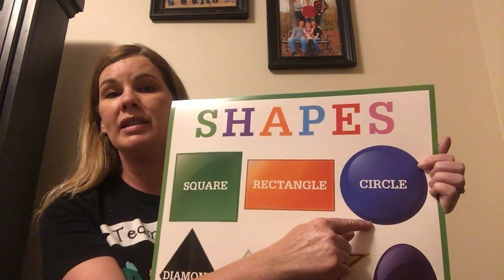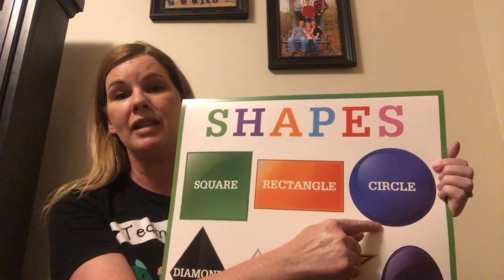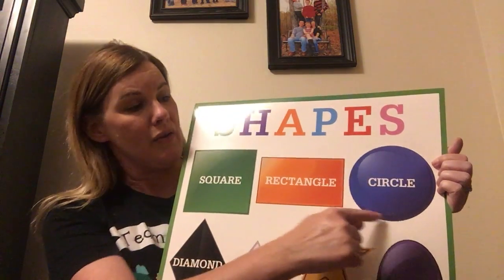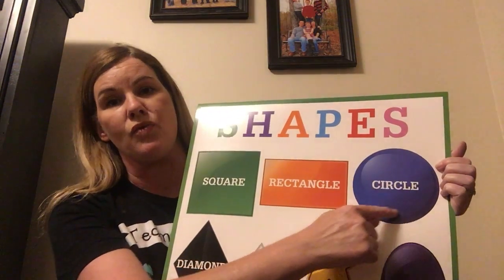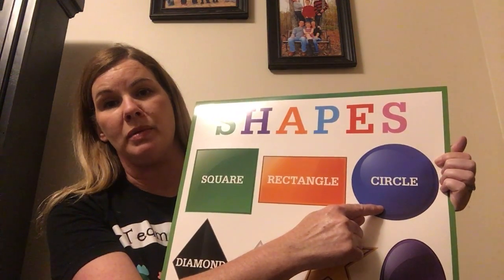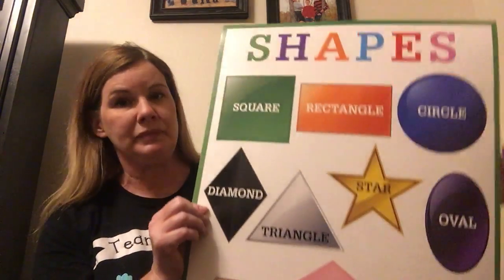Here's one. What is this one here? There's no sides on this one. It just goes around and around and around. What is this shape? This shape is the circle.